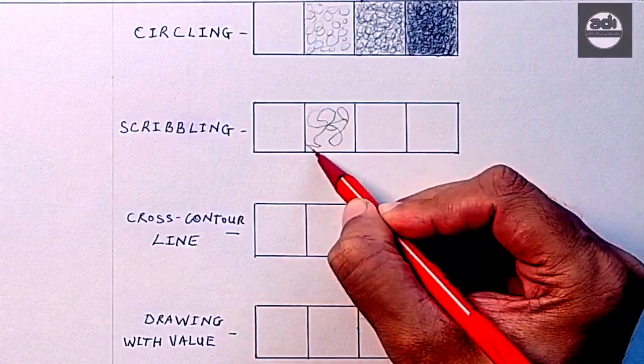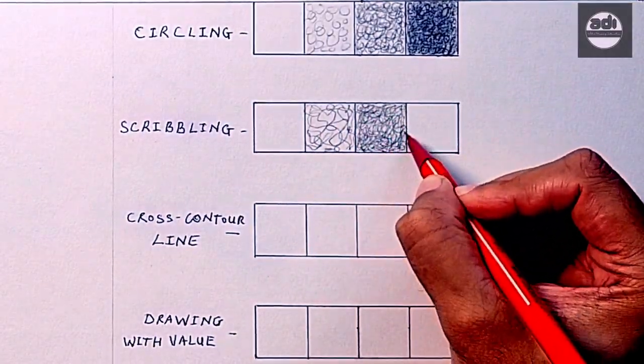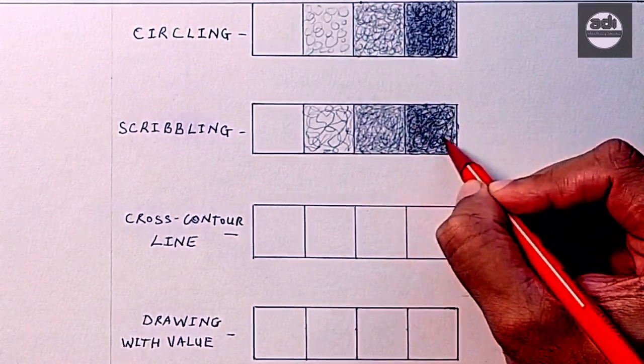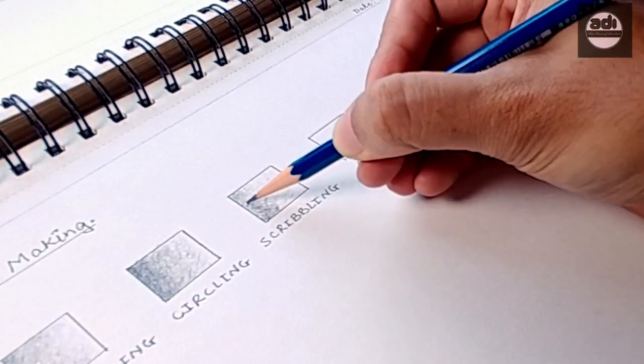Scribbling is a mark making technique in which you draw scribbles to create value and texture. A value range is achieved by varying the size of the scribbles, layering, and using different grades of pencils.